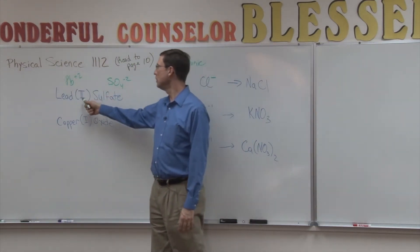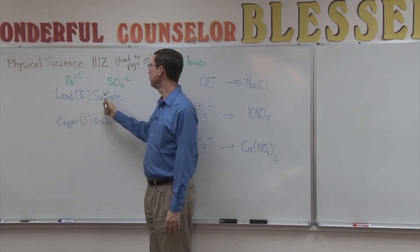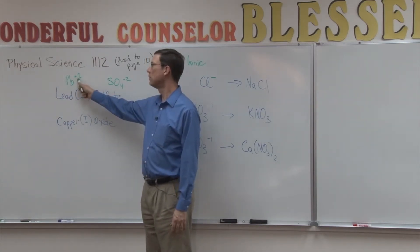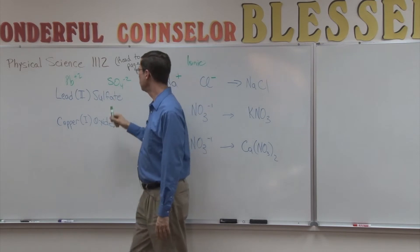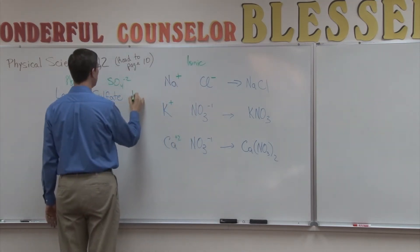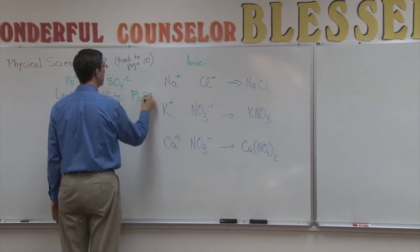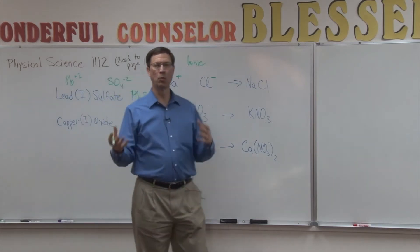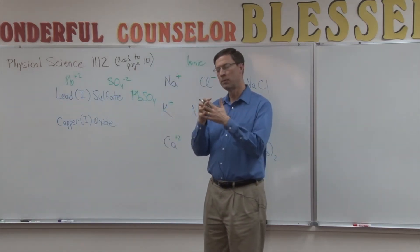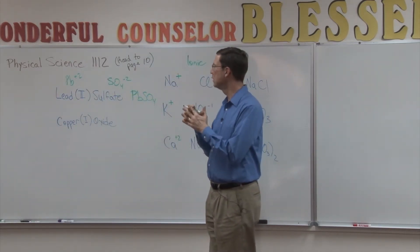So this is lead. Now lead is Pb positive two. So to figure out what the formula is for lead sulfate, look at the charges. Ah, positive two, negative two. I can just put these together and have PbSO4. I only need one of each of those and it'll form a perfectly balanced, electrically balanced molecule.